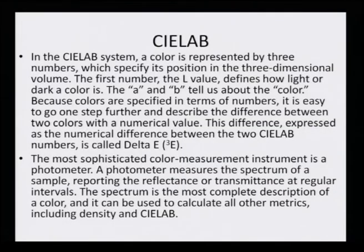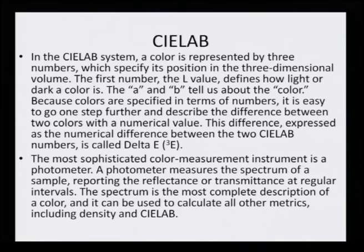The difference expressed as a number between two C-LAB values is referred to as delta E. The most sophisticated color measurement instrument is a photometer, which measures the spectrum of the sample reporting reflectance or transmittance at regular intervals. The spectrum is the most complete description of a color and can be used to calculate all other metrics including density and C-LAB. C-LAB values give a complete picture of comparative data of the dyed fabric — whether the dye has run off, washed off, or whether perspiration or alkaline/acidic solutions have made any difference.